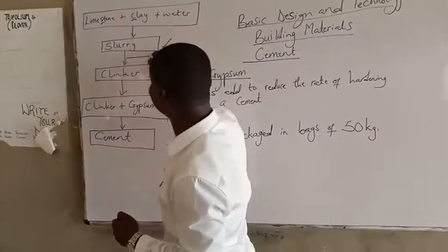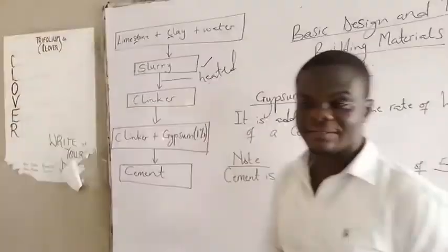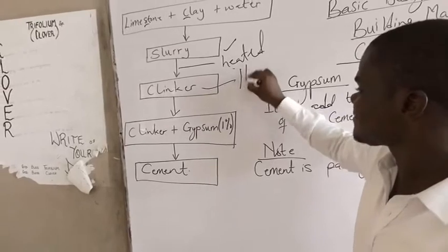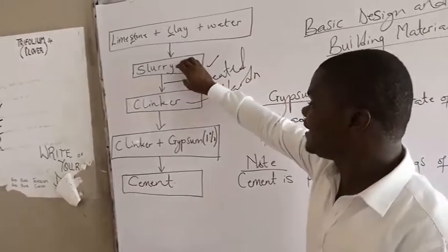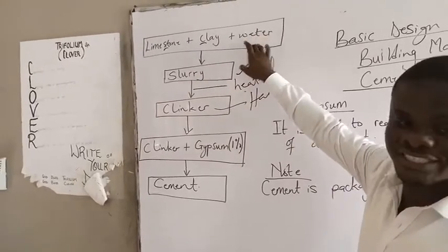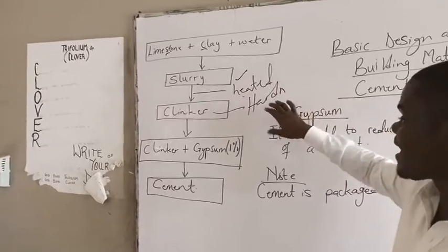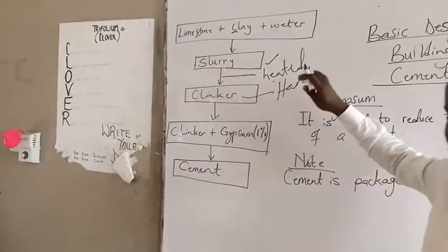So once the slurry is obtained, then the slurry is heated to obtain a substance called clinker. The clinker is hard because when the slurry is heated, the heat will take away the moisture content of the slurry. So when the slurry is heated, you will get clinker.